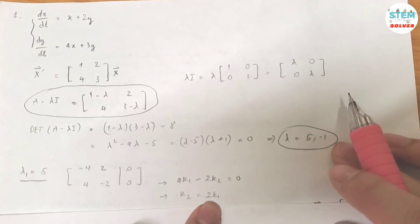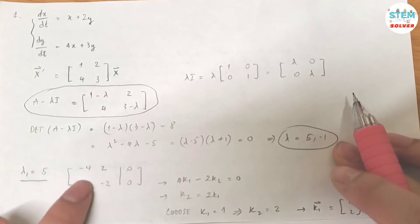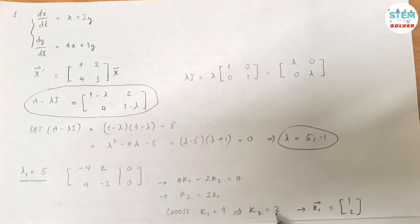Now k2 is in terms of k1, because you have infinite solution. So let's do k1 equals 1. Then that gives me k2 equals 2. Then my vector k1 is equal to [1, 2]. So that is k1 for lambda 1 equals 5.